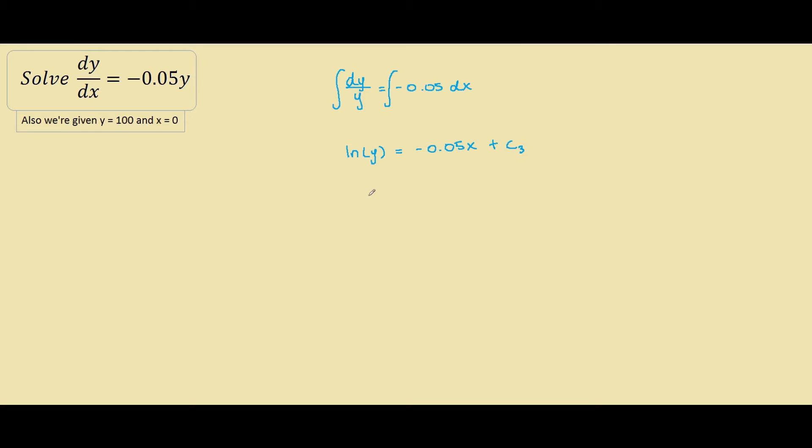Now we apply the exponential function to both sides. So ln is the inverse function of the exponential so it cancels out. So we're left with y equals e to the negative 0.05x plus c3.